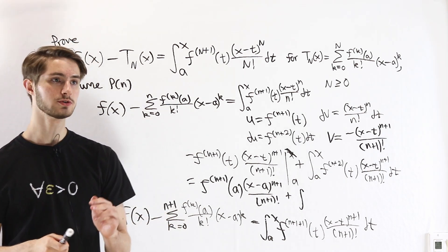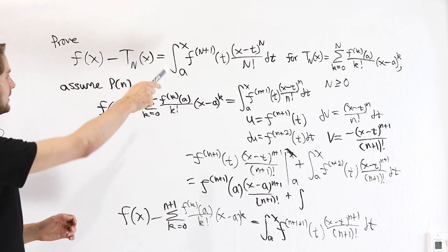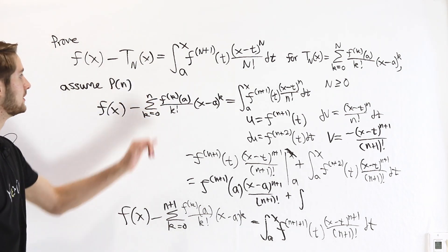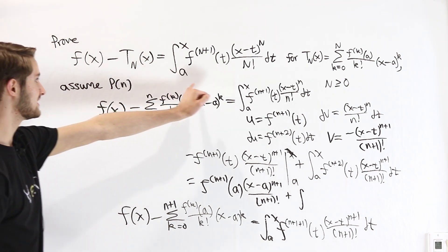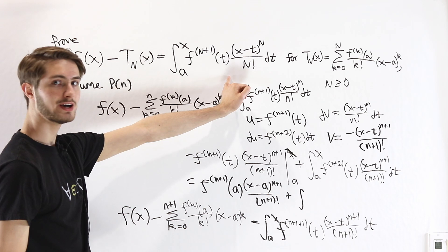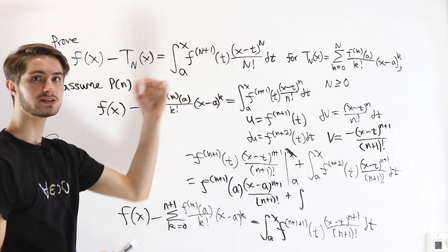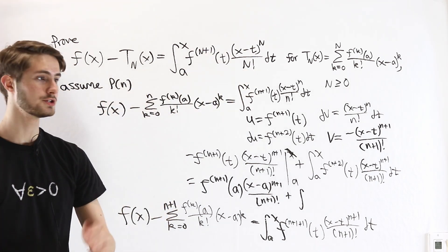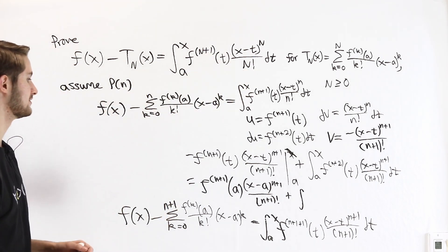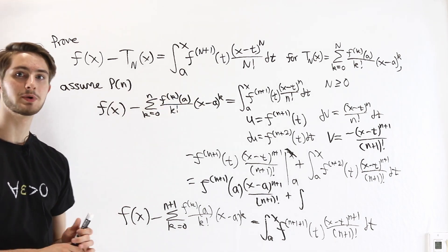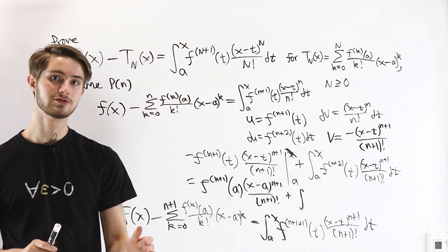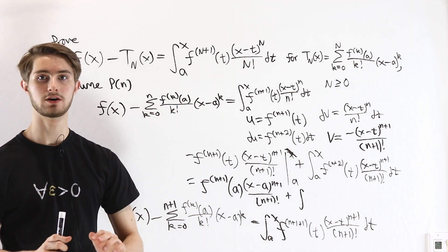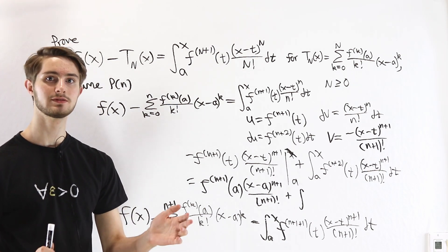That is the integral form of the error term for an nth order Taylor polynomial. This gives us an exact expression telling us how close the polynomial is to the original function f(x), and it can help us determine how accurate our approximations are.